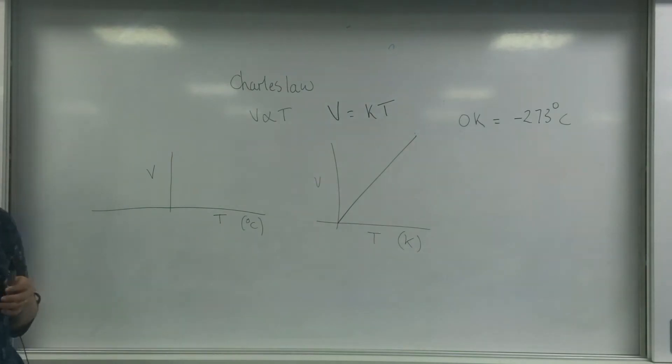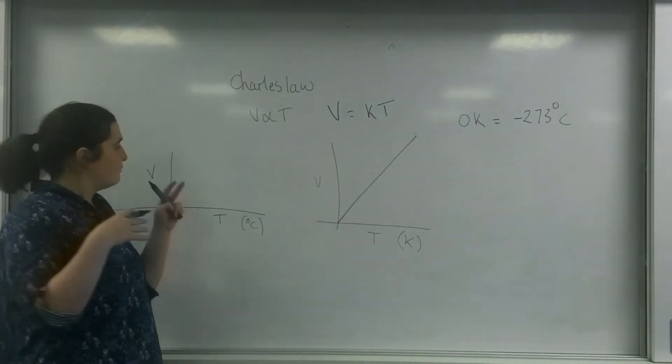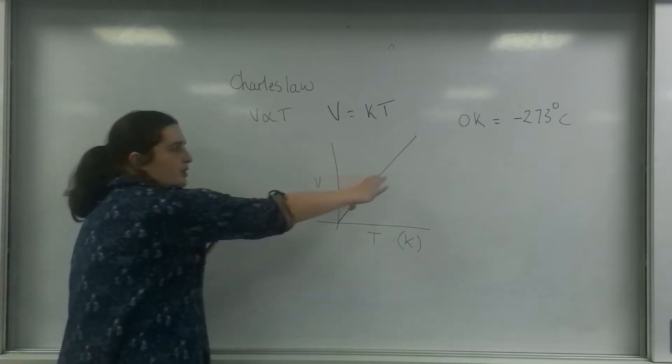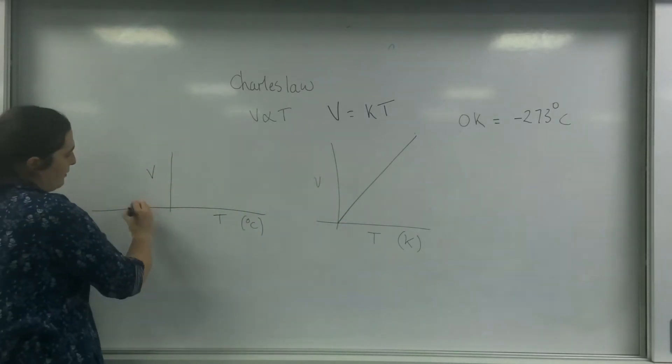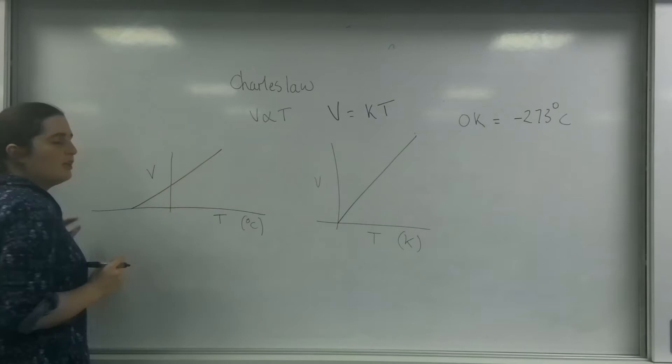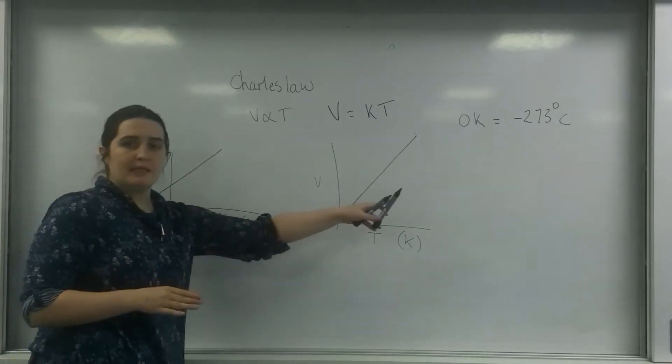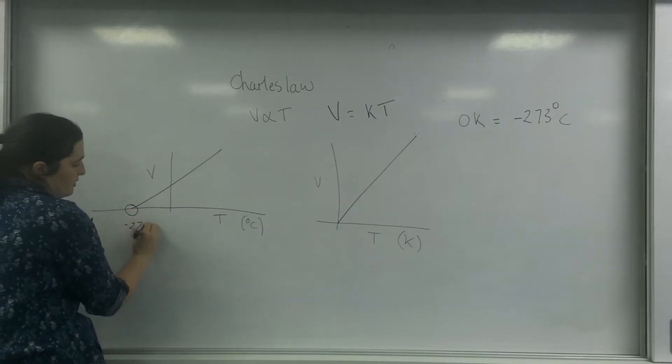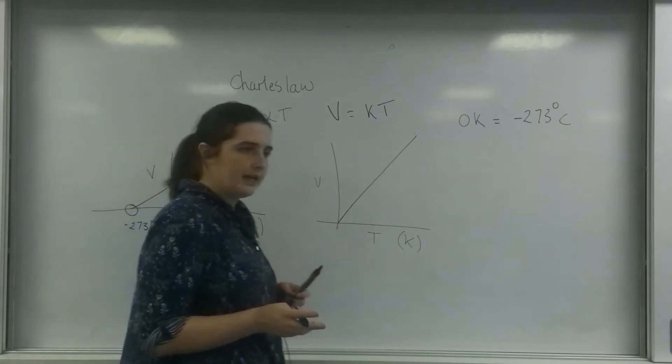So if I was to plot this graph on a volume versus temperature graph, it would be moved towards the left. And it would look something like this. The gradient would be the same, however, this thing here would be minus 273 degrees C.